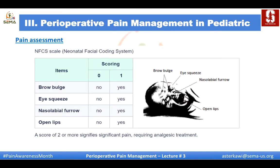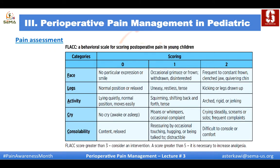Another simple tool is the Neonatal Facial Coding System — you look at brow bulge, eye squeeze, nasolabial furrow, and open lips. There is also a behavior scale for scoring postoperative pain in young children (FLACC), which looks at face, leg movement, activity, crying, and consolability. A score of 3 or more warrants consideration of intervention; a score of 5 or more indicates greater pain. I would probably recommend this scale.